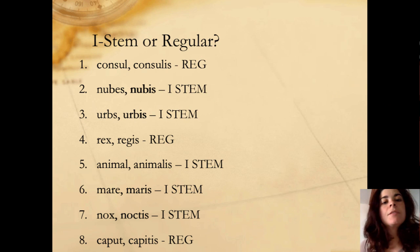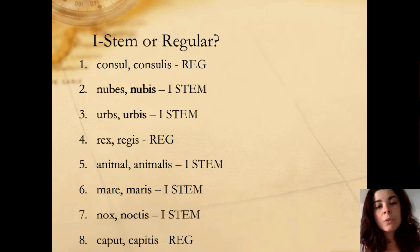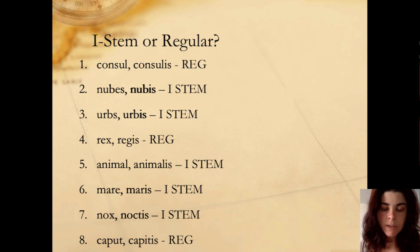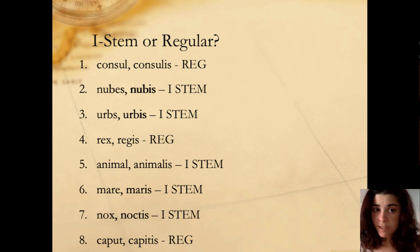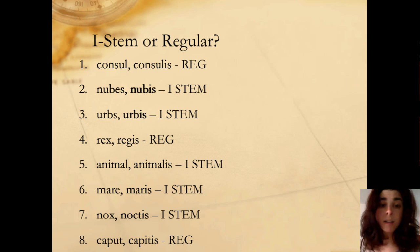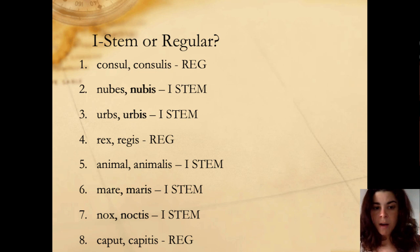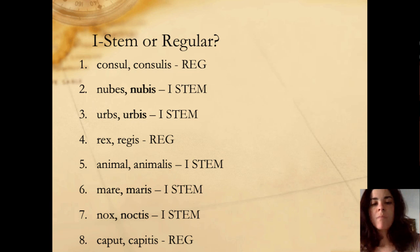All right, let's take a look at the answers. Consul, consulis is a regular third declension word. It's not ending in IS or ES in the nominative, it doesn't have one syllable and doesn't end in S or X. And it's not a neuter word, but even if it were, it's ending in UL, not AL. So regular.